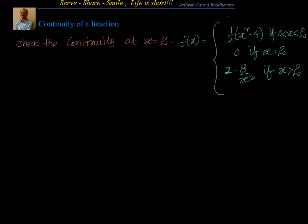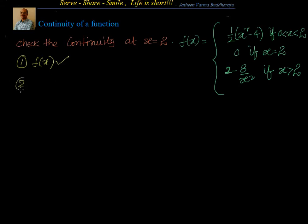Now let's recall what we know about the continuity of a function. A function is said to be continuous if, one, f of x is defined at x equal to 2 — at x equal to 2, it is equal to 0, so that is good. Second, the limit should exist — both the left-hand side and right-hand side.